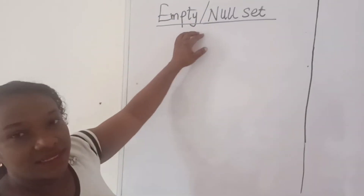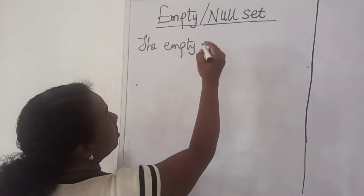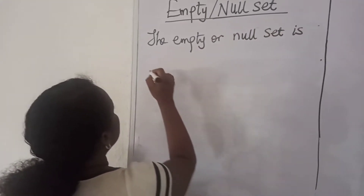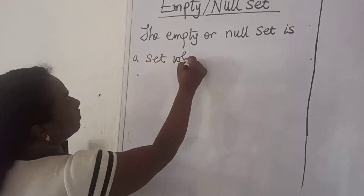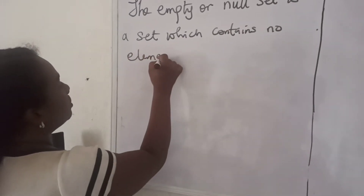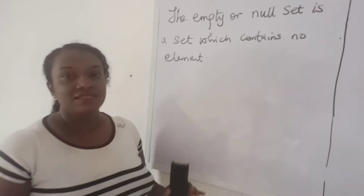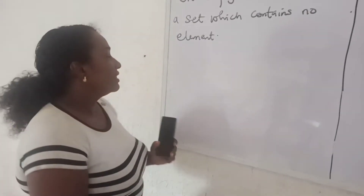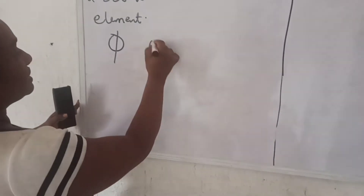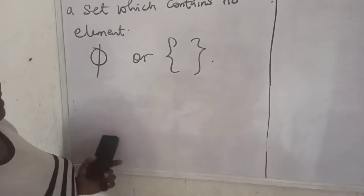Next, we will look at the empty set, which is also called the null set. The empty set is a set which contains no elements. If a set has no element, that set is said to be an empty set. The empty set is represented by the symbol ∅, or it can equally be represented by an empty pair of curly brackets {}.